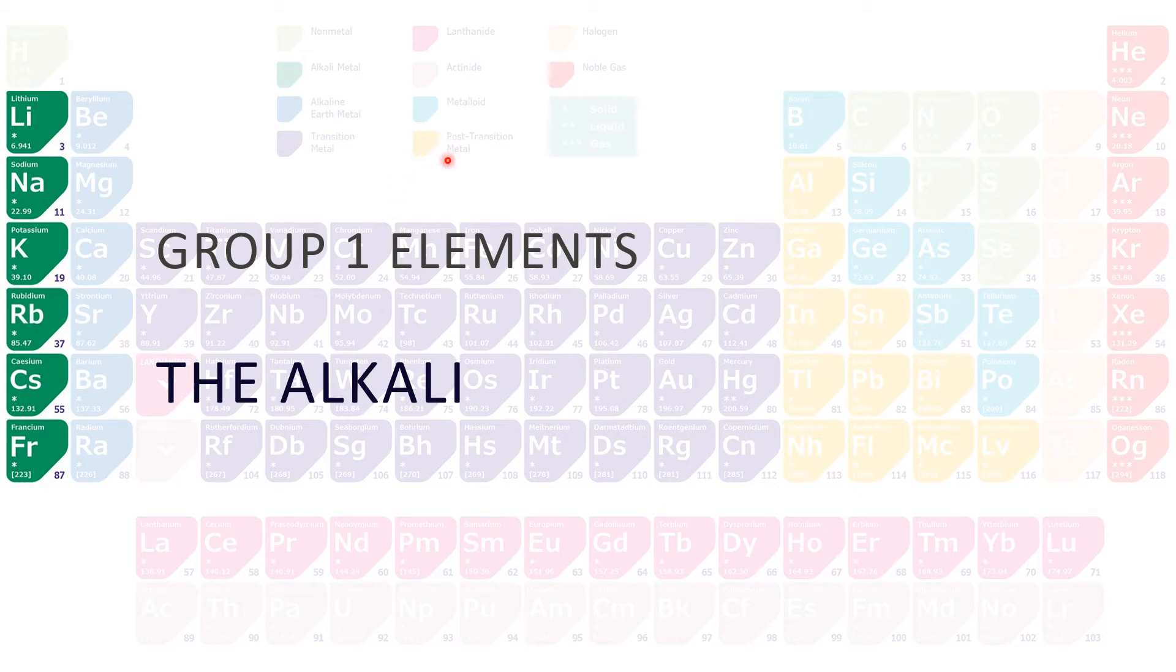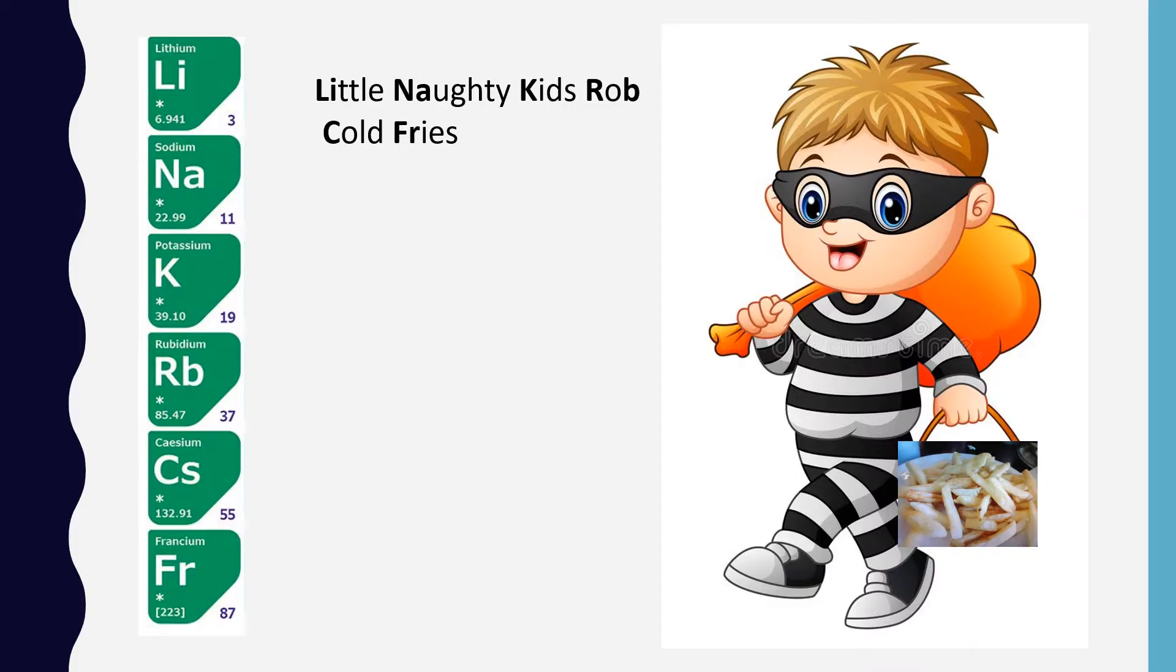Hey guys and welcome to our new video. Today we're going to be talking about the Group 1 elements, their physical and chemical properties. The Group 1 elements are also called the alkali metals, and those ones here—lithium, sodium, potassium, rubidium, cesium, and francium—are the alkali or Group 1 elements.